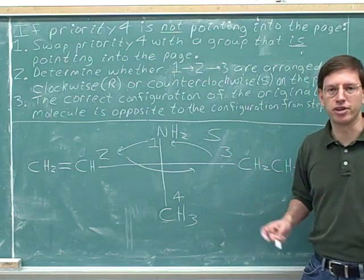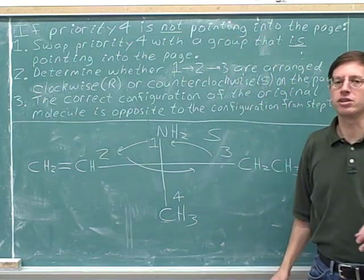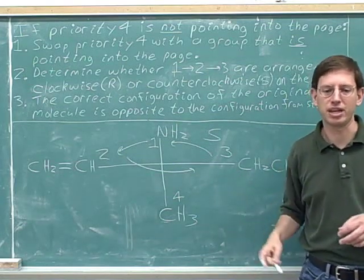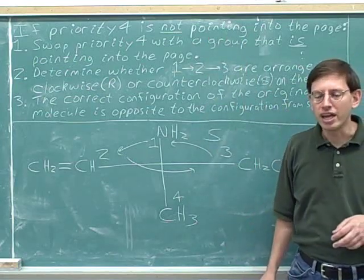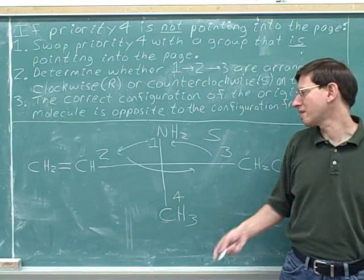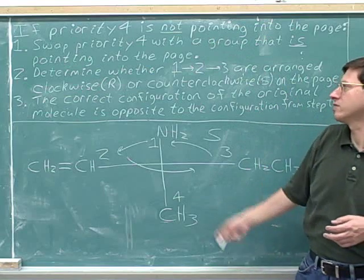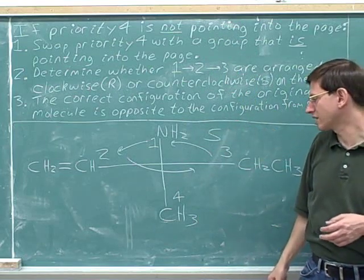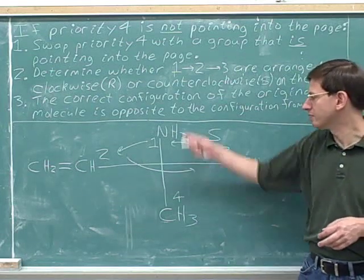I just threw this problem in to make sure that you're awake. Even though right now we're focusing on the case where the number four priority is not pointing into the page, we still need to always check at the beginning whether or not the number four priority is pointing into the page. After assigning priorities, check: is the number four priority pointing into the page or not? If it is pointing into the page, that's case one — use the simple one-step method. Only if the number four priority is not pointing into the page do you need to use the slightly more complicated three-step method with the swap.